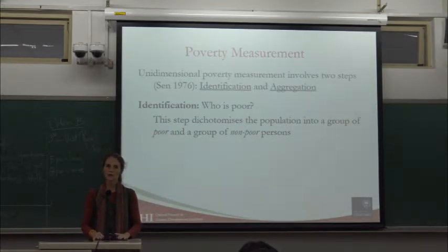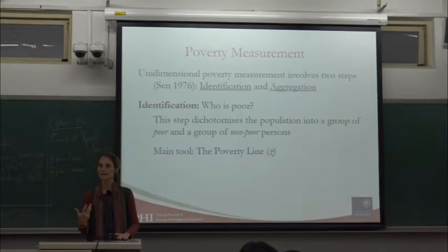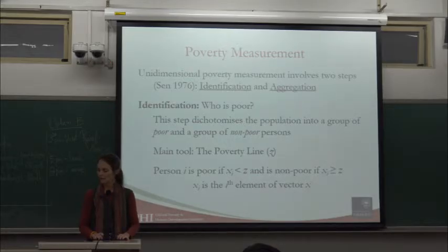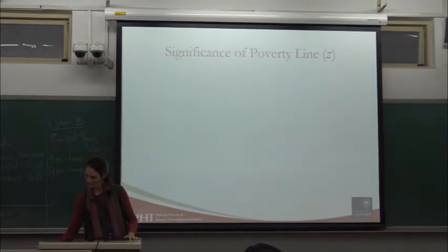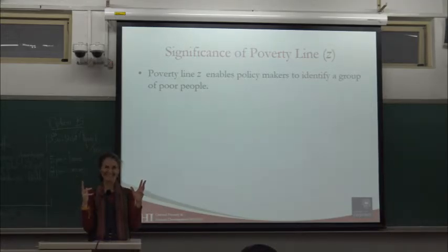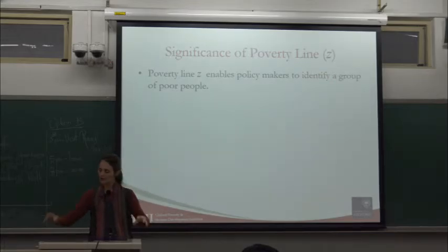We usually use a poverty line Z to identify poverty status. The person is poor if their income is strictly below Z, and non-poor if their income is equal to or greater than Z. x_i is the ith person's aggregate. The poverty line identifies who is poor based on their income aggregate. If it's less than the poverty line, they're poor. It's also a policy benchmark — to bring people's income at least to Z. Using an absolute poverty line, we ignore the non-poor.